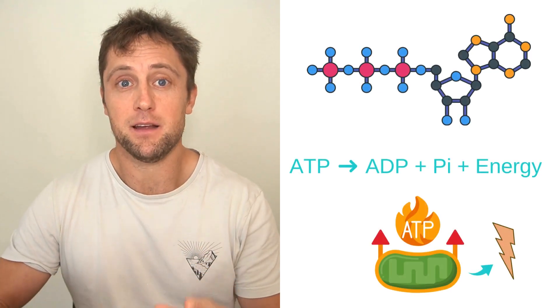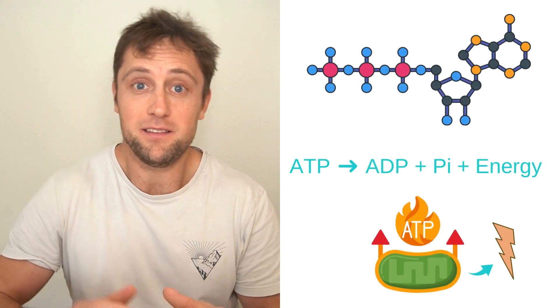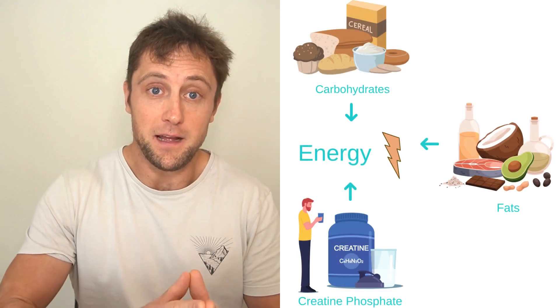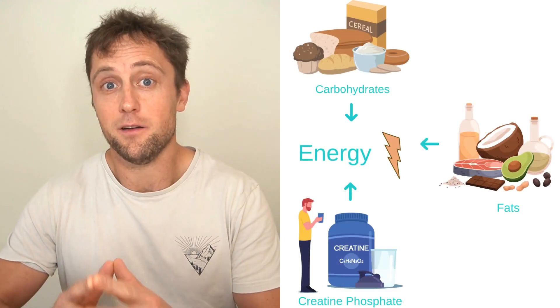Our body's energy currency is ATP or adenosine triphosphate. When our muscles contract, they break down ATP into ADP and a phosphate group, releasing energy for muscle contraction. This ATP needs constant recycling to metabolic pathways that break down carbohydrates, fats, but also creatine phosphate.